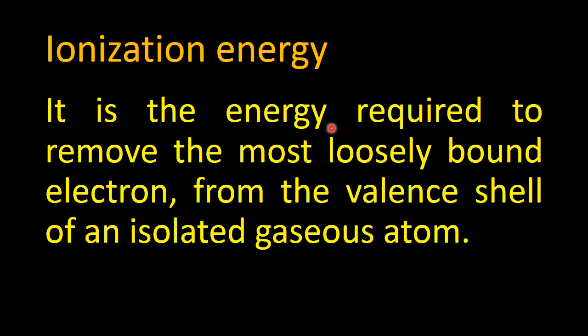The electron that moves out must be present in the valence shell, which is the outermost shell of an atom. The term 'isolated gaseous atom' is used because in solids and liquids atoms are present in bulk form, making it difficult to study individual characteristics. In gases, atoms are far apart and each can be considered an isolated atom, making it easier to find out its characteristics.